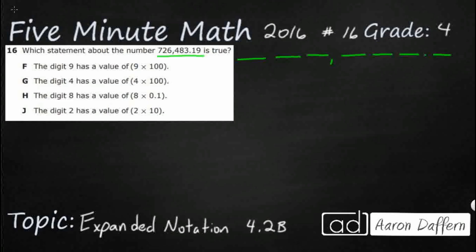So we've got 7-2-6-4-8-3, and then we've got a decimal—we got a point nineteen right there. So we've got our tenths place. We're gonna start at our decimal, move to the right. We've got tenths and we've got hundredths.